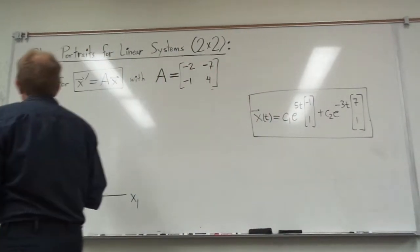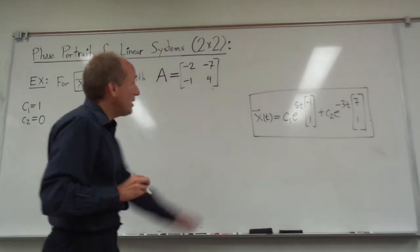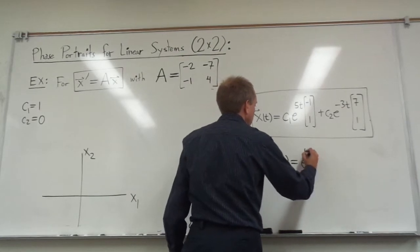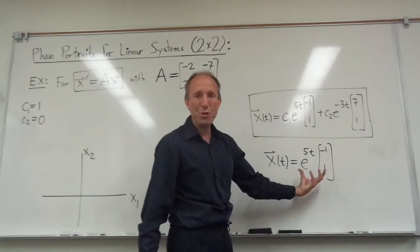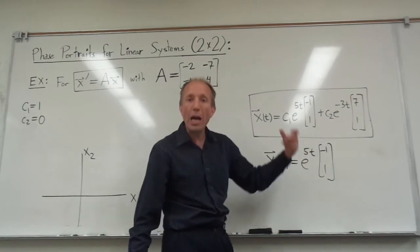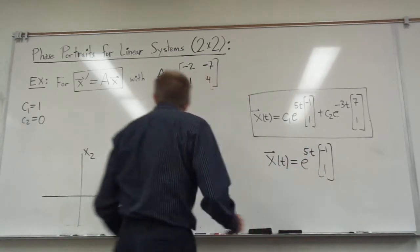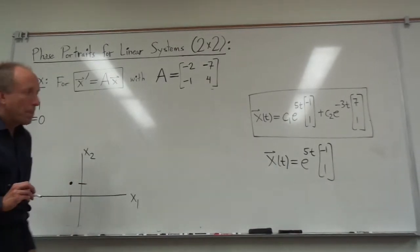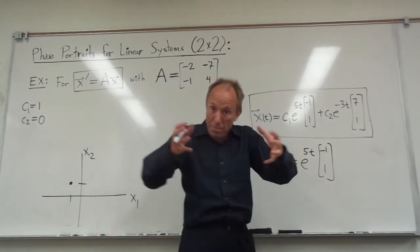So for example, I could let c1 equal 1 and let c2 equal 0. If I did that, let's look at what we would have over here. Well what we would have if c1 is equal to 1 and c2 is equal to 0 is we would have this solution right here. Now this is a solution that changes with time. So for example at time 0, x of 0 is negative 1, 1. I'm going to go ahead and draw that on my graph right here. And then as time increases, as time goes forward, this exponential just gets bigger and bigger.